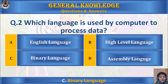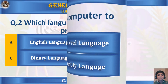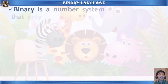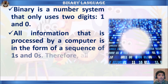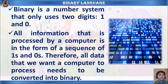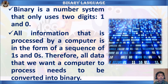The answer is C) binary language. Let's learn two facts about binary language: binary is a number system that only uses two digits — one and zero. All information processed by a computer is in the form of a sequence of ones and zeros. Therefore, all data that we want a computer to process needs to be converted into binary.